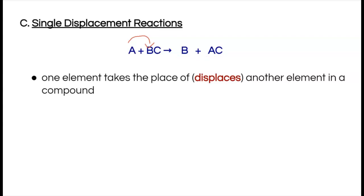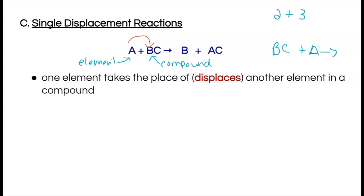How do we recognize a single displacement reaction? You're going to see an element reacting with a compound — that's your cue. You may also see the reactants written as BC plus A rather than A plus BC, but the order doesn't matter. What you're looking for is that element-and-compound combination.